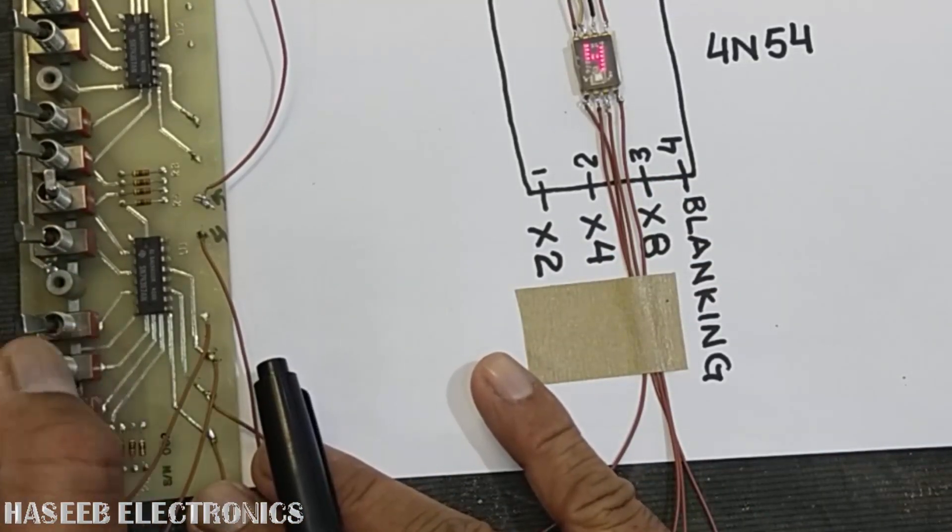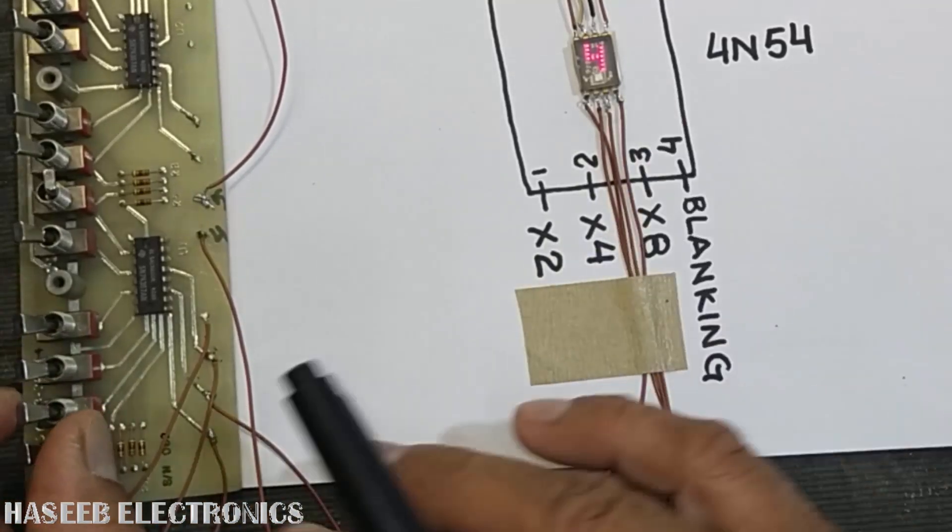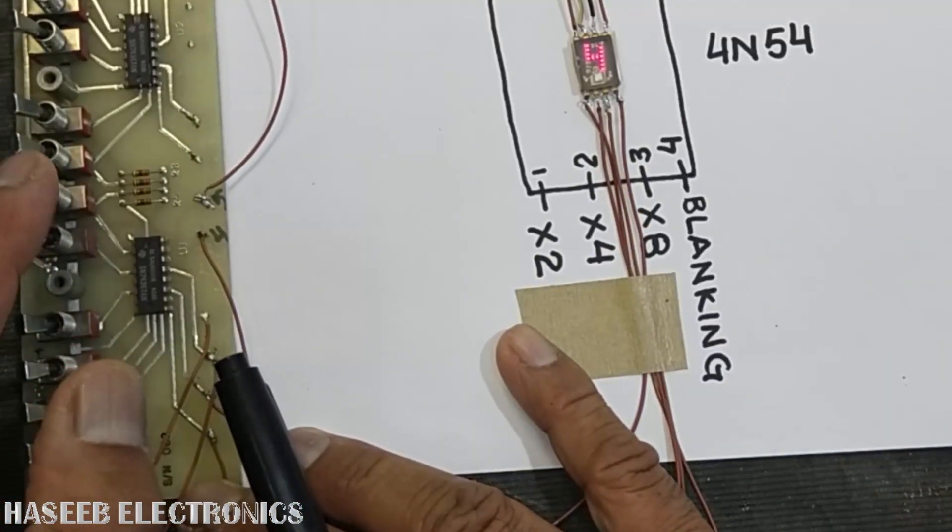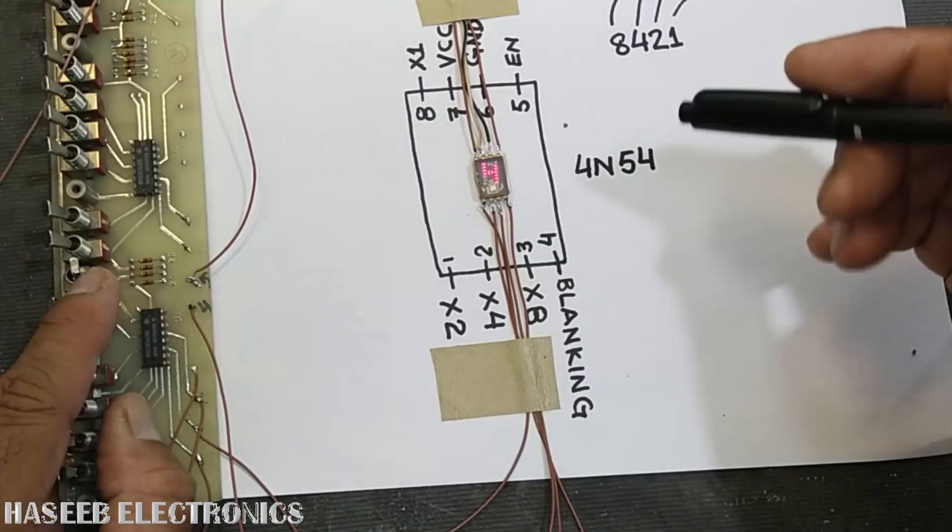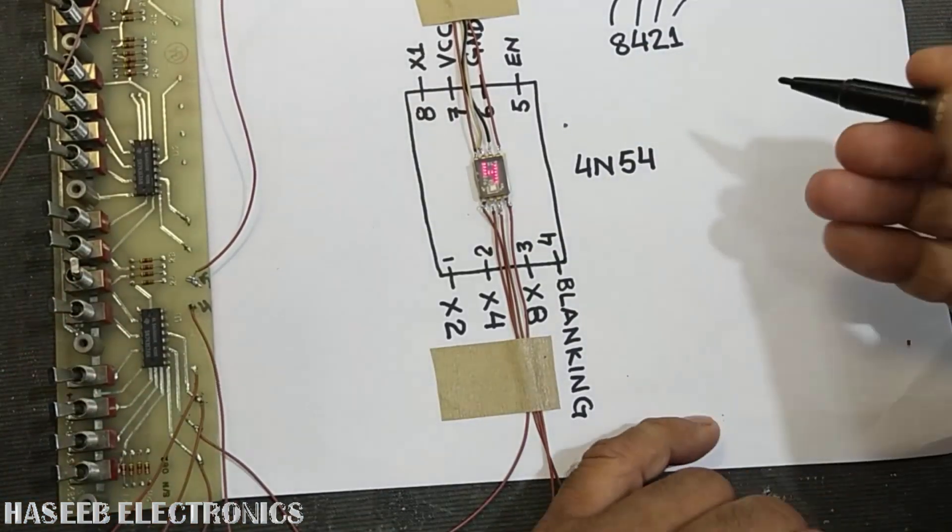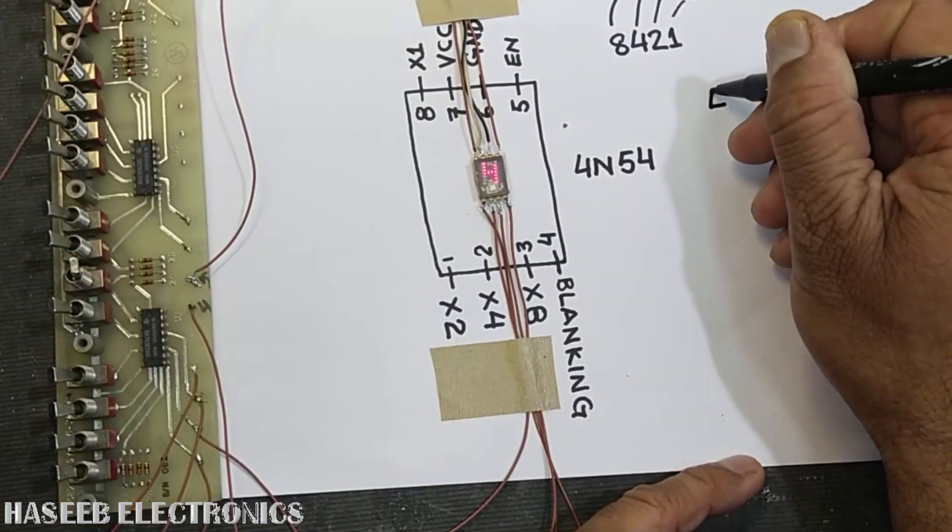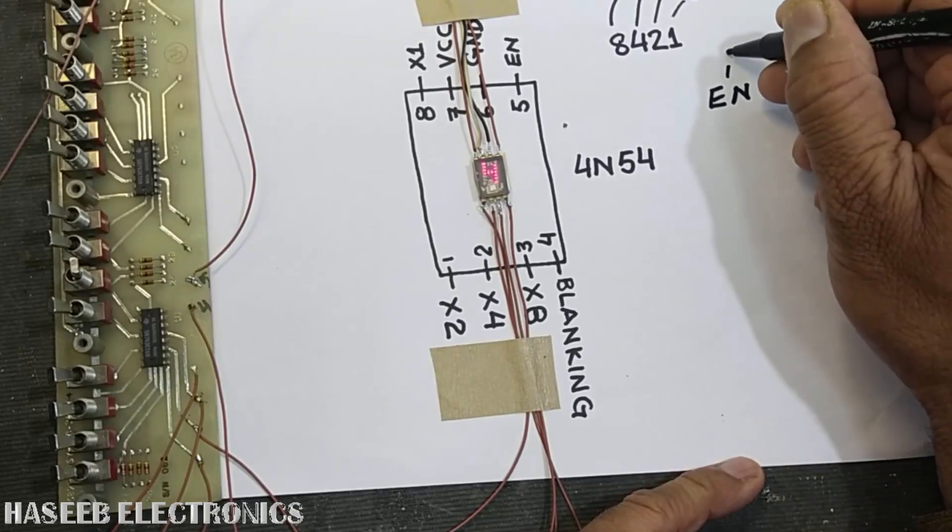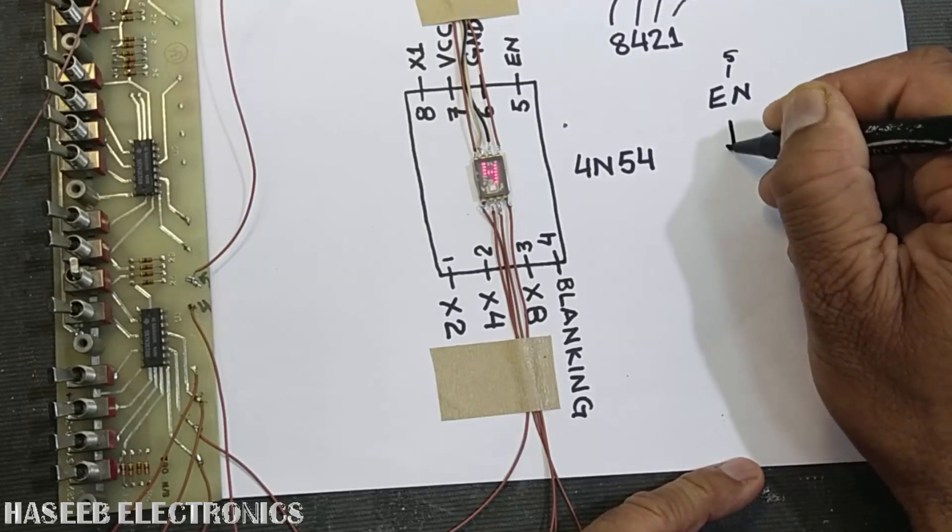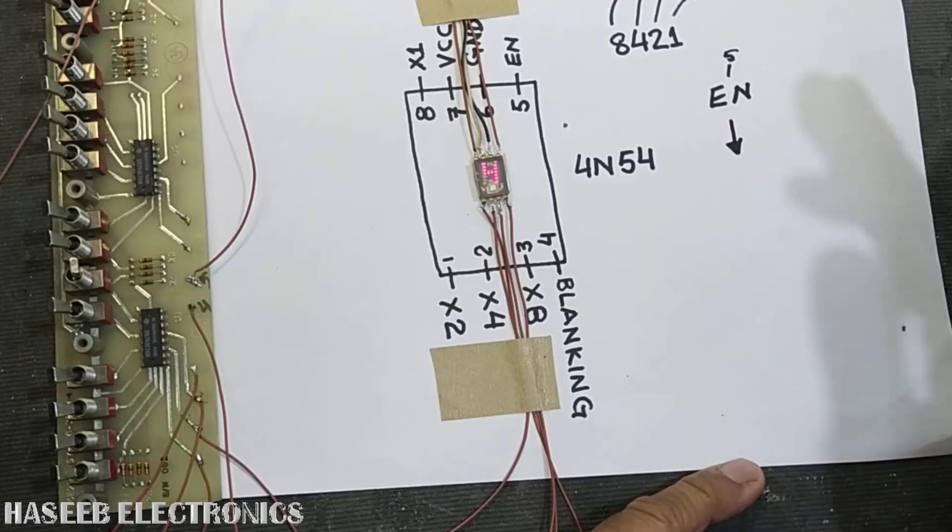Enabled, that means enable pin is low. When the enable pin, that is pin number 5, is low, it will allow to write the data.